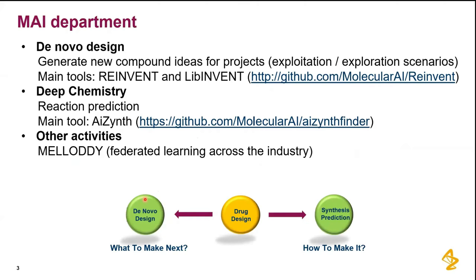The first question is: what to make next — compound idea generation, what could be a potential new drug, often referred to as de novo design. That's the team I'm in. The main tools include REINVENT, and all our tools are published so you can look at those. These are idea generation tools using deep neural networks.